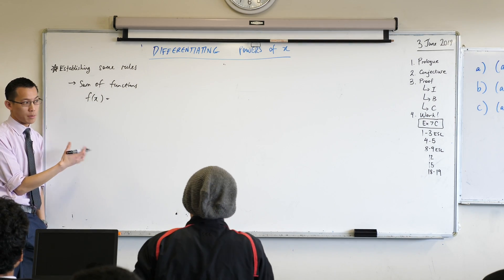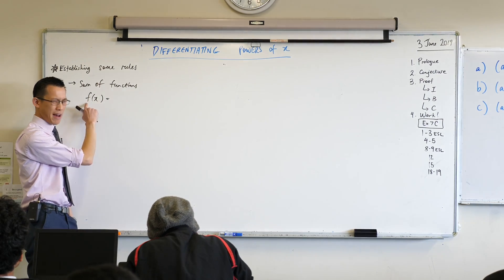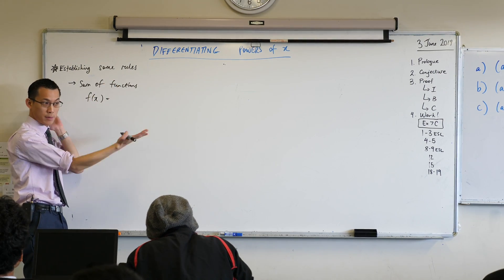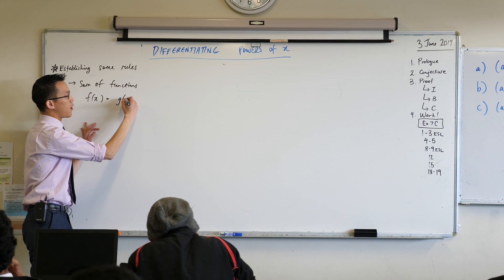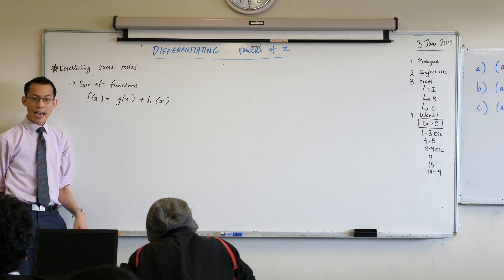So in order to deal with these I'm just going to give them some names. I'm going to say that my big function, whatever I'm dealing with, let's say it's made up of two smaller functions called g and h.